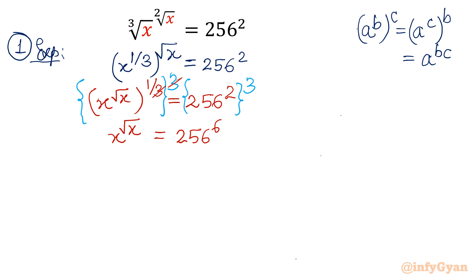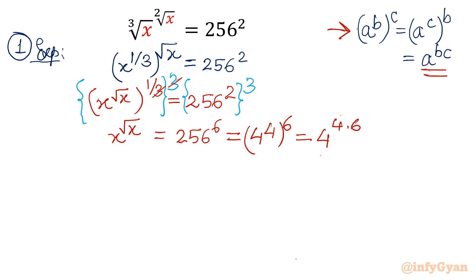Now see, 256 can be written as 4 raised to the power 4. By the same property of exponents I will apply b times c, so it will become 4 raised to the power 4 times 6. Let me write 4 raised to the power 3 times 2, and then rewrite 6 as 3 times 2 times 4.